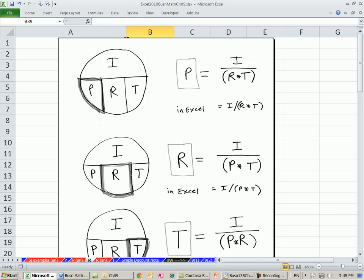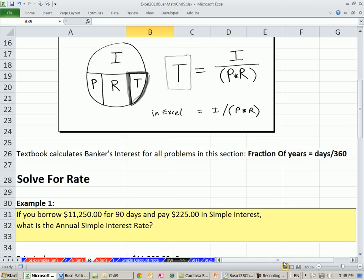Similar to last video, the way this diagram works for memorization trick is you cover this R up with your finger, and that means I, the dollar amount of the interest divided by, in parentheses, principal times time, will always give you the rate. So interest divided by principal times time gives us the rate. Let's look at some examples here.